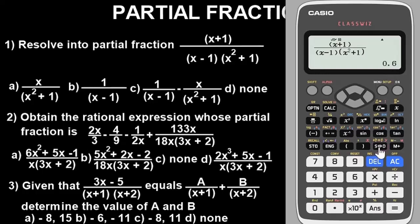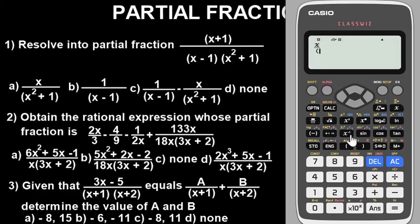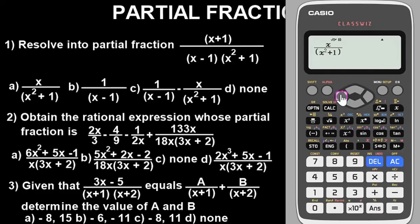Let's begin with option A. For option A, the numerator is X over (alpha X² + 1). Press equals — we get 3 over 5, which is 0.6. That's not our value of 0.4, so option A is wrong. Let's try option B.